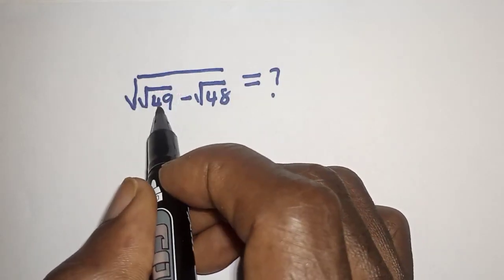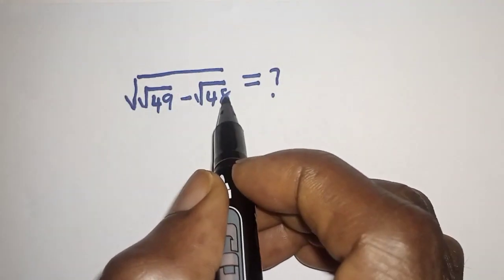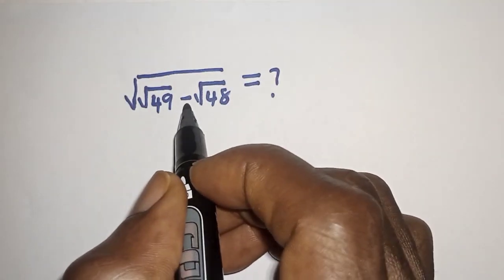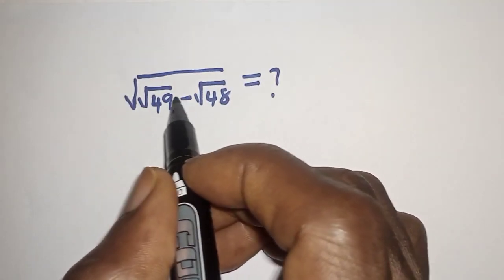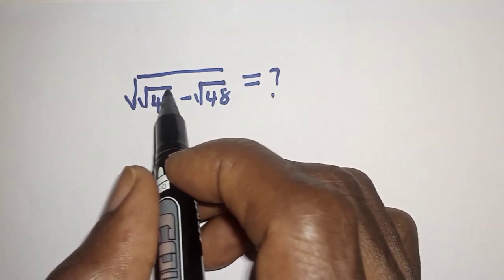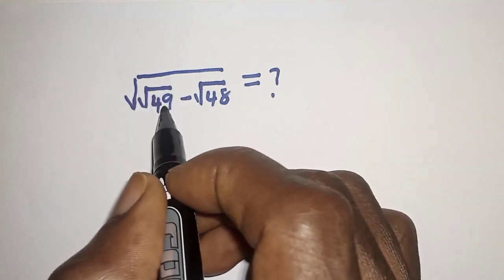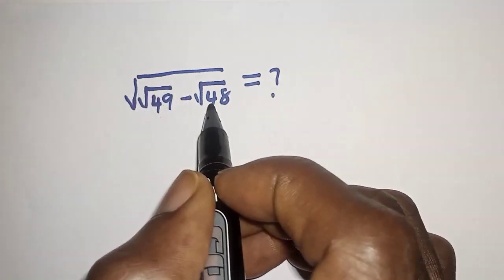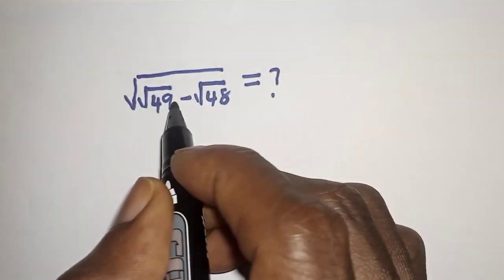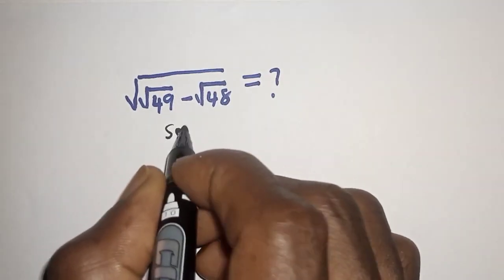Square root of square root of 49 minus square root of 48 is equal to what? Hello, welcome to math. In this class we want to evaluate this nice math problem: square root of square root of 49 minus square root of 48 is equal to what? Like, share, comment and subscribe. Solution: